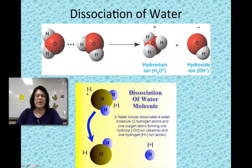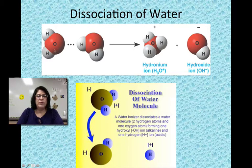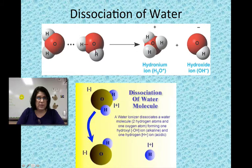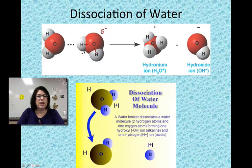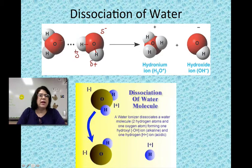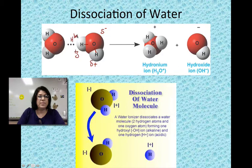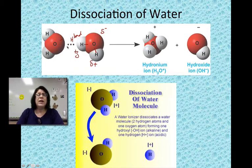We're going to talk about the dissociation of water. Here are two different pictures of the dissociation of water — two water molecules. Remember that water molecules are held together by polar covalent bonds, which makes the water molecule have a slightly negative oxygen end and a slightly positive hydrogen end. The slightly negative oxygen and the slightly positive hydrogens are attracted to each other — that is a hydrogen bond. That hydrogen bond is holding these water molecules to one another. Occasionally, the hydrogen from one water molecule is going to move over and become part of the other water molecule.